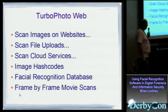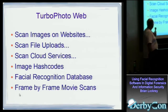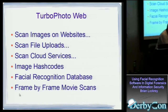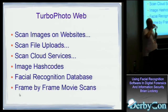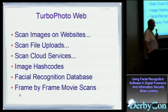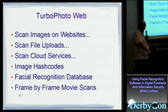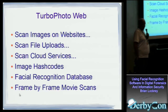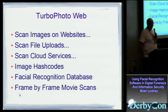The next phase was creating what we call TurboPhoto Web — basically the same package rebuilt on a Linux WAMP environment that allows images on websites to be scanned. They can be scanned in bulk batch mode — every week going out and scanning the entire site — or almost in real time as they're being uploaded. With that you can scan any kind of cloud-based service, website, or backup service. It can use image hash codes, facial recognition databases, as well as the frame-by-frame movie scans I talked about earlier.